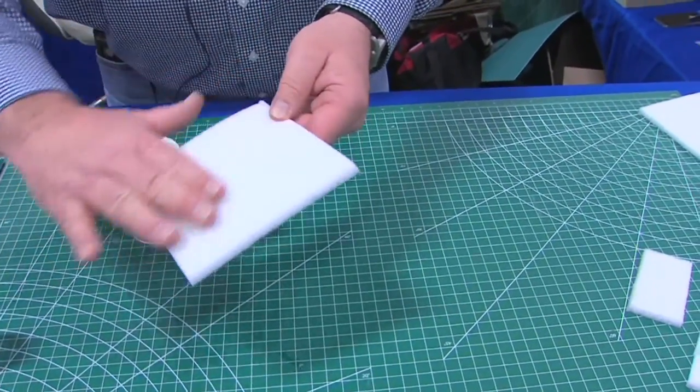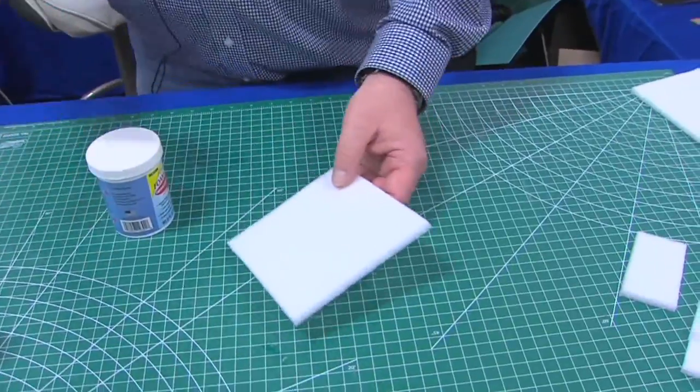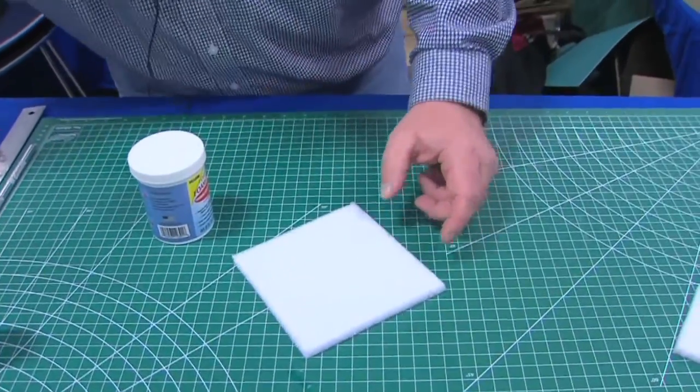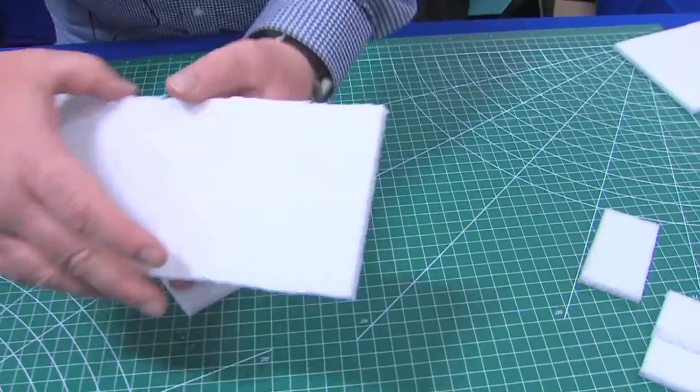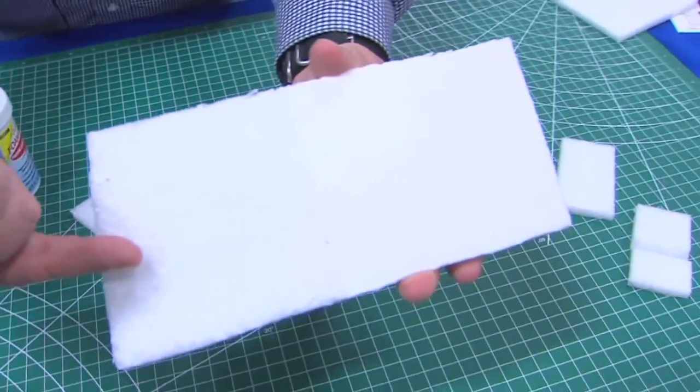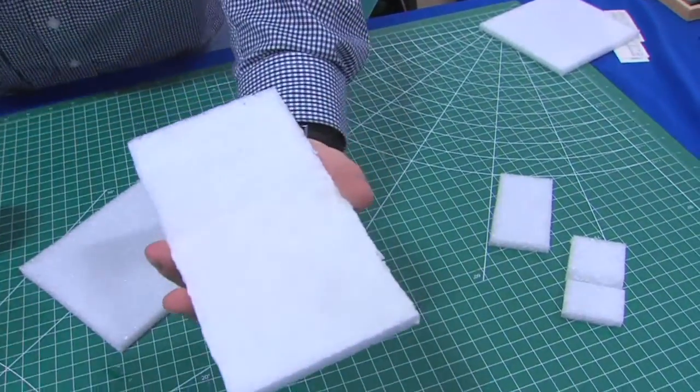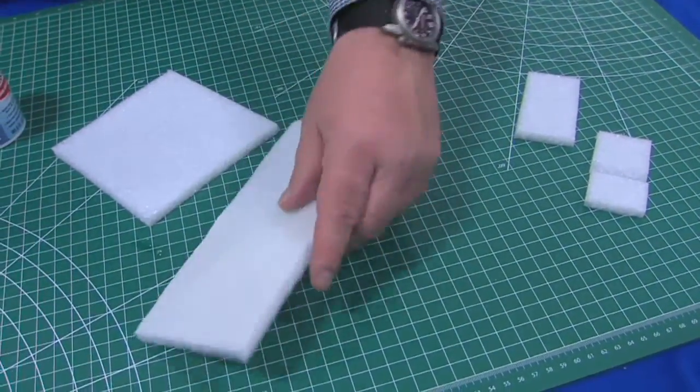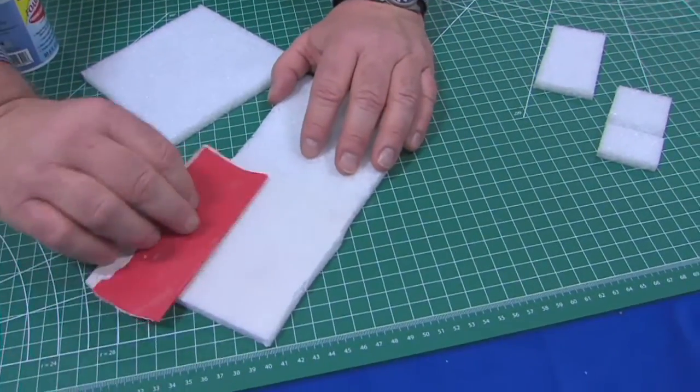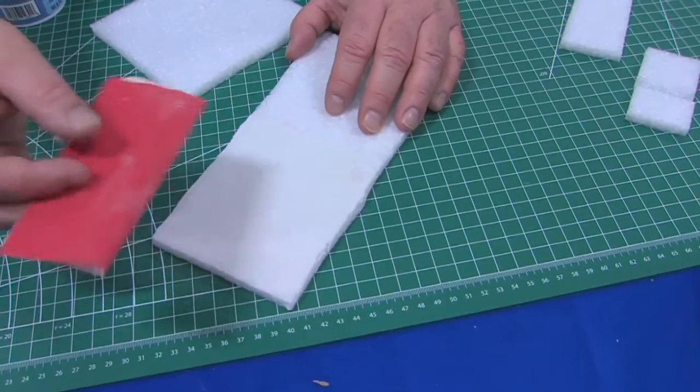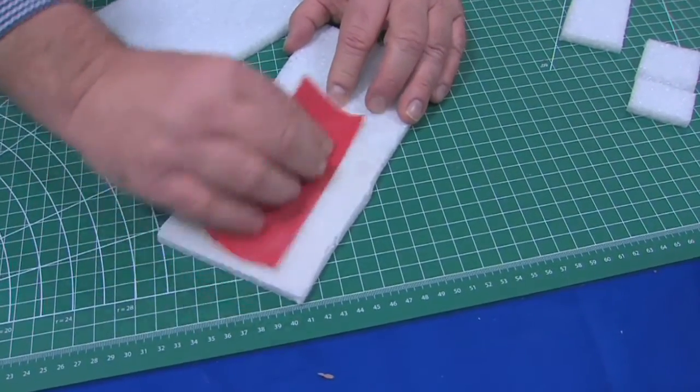I would like to show you a finished version of this. Here is the untreated EPP. Here is the foam finish. As you can see, it's nice and slick. What you have to do at this point is you could take 180 grit or 200 or even 220 grit sandpaper, sand it all down.